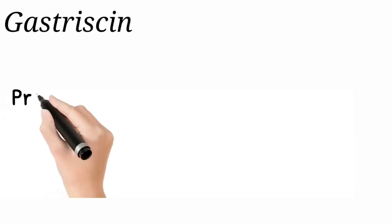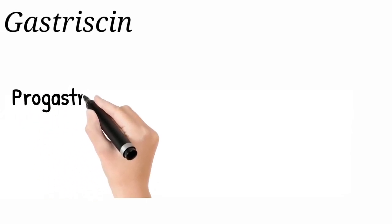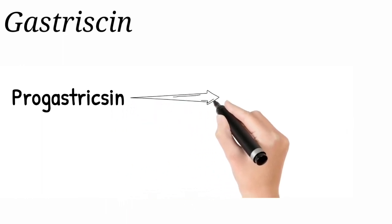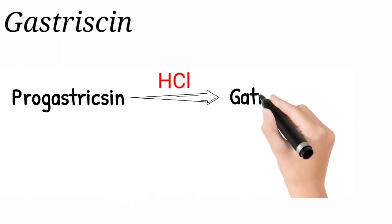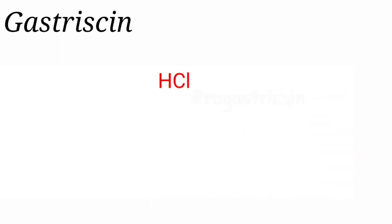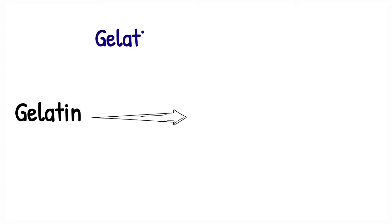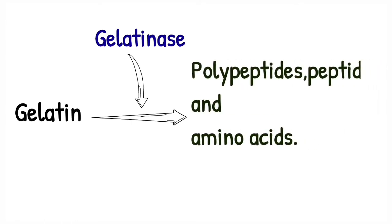Coming to the third enzyme, gastricin. It is secreted as an inactive zymogen and activated in the presence of hydrochloric acid. The optimum pH is 3 to 4, and it acts as a proteinase. The fourth enzyme is gelatinase, which hydrolyzes gelatin to form polypeptides.